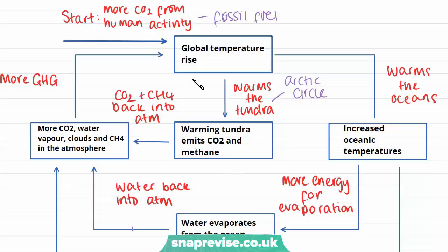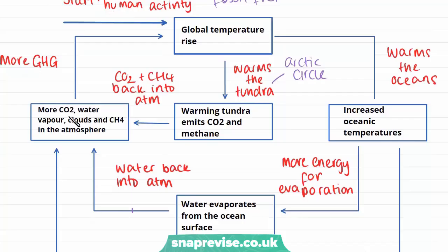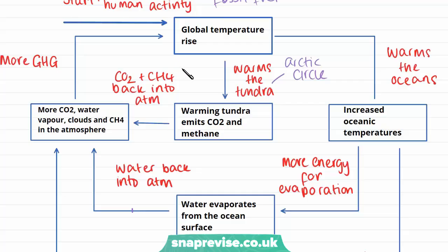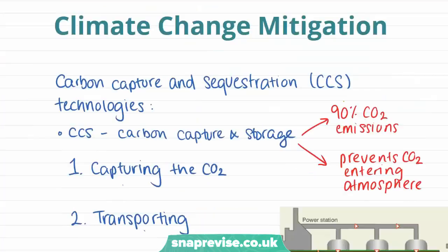So overall, global temperature rises are going to release more CO2, more water vapour, clouds, and methane back into the atmosphere. Because of the greenhouse effect and these being greenhouse gases, this is going to increase temperature rises even more. This is the positive feedback cycle of water and carbon and their effects on the global climate.